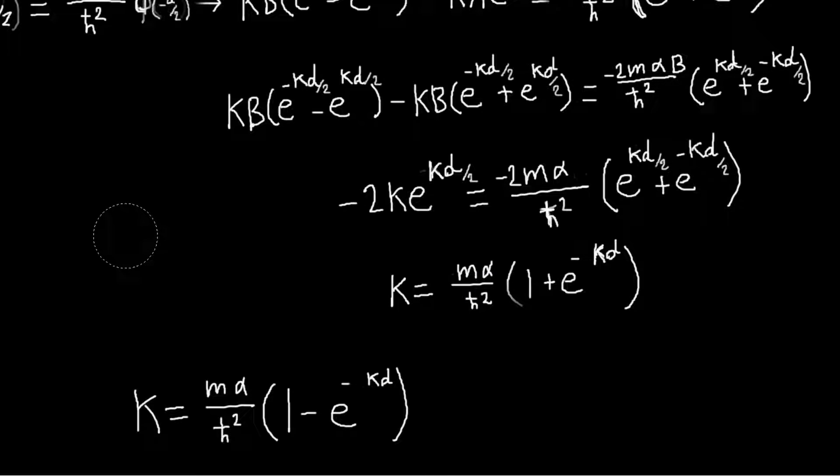So another thing that's commonly asked is, how small can D be before our odd solution vanishes? So when do we go from having two bound states to having only one?